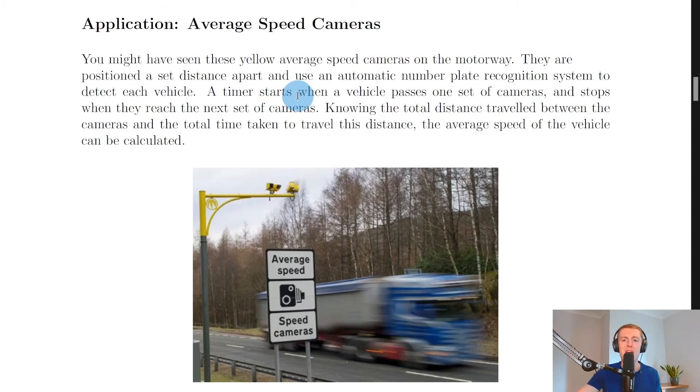It then says they use an automatic number plate recognition system to detect each vehicle. A timer starts when a vehicle passes one set of cameras and stops when they reach the next set of cameras.